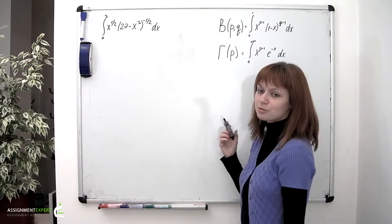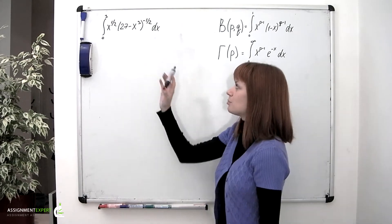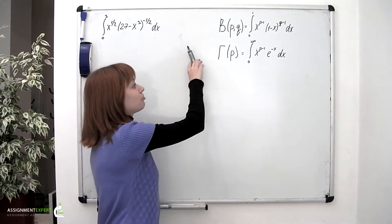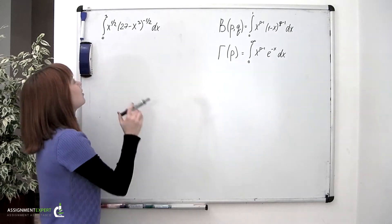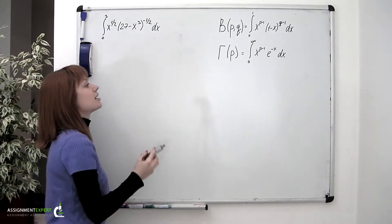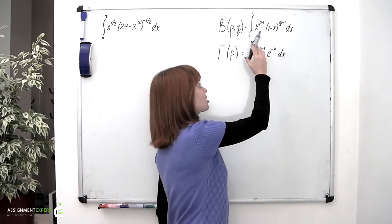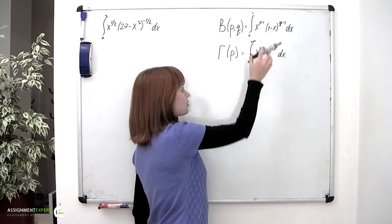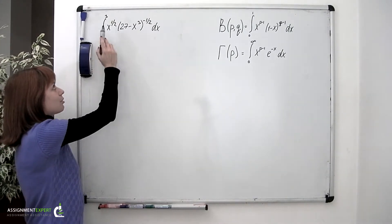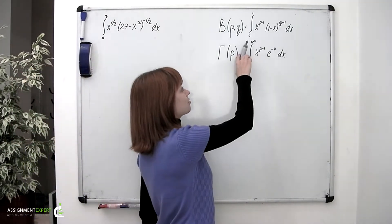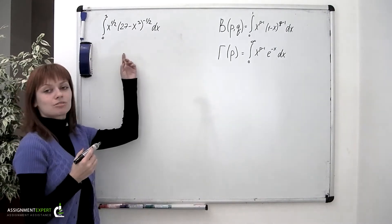If we look at this integral, we will notice a couple of things. First of all, what we have is a product of two power functions. A similar construction appears under the integral of the beta function. However, our integral contains x cubed, whereas in the beta function expression x is raised to the first power. Also, the limits of integration of our given integral are 0 and 3, whereas the beta function has limits from 0 to 1. So it seems reasonable that we try and transform the given integral into a beta function.